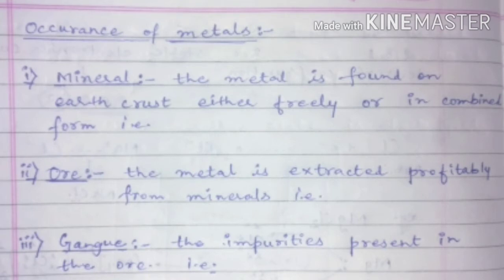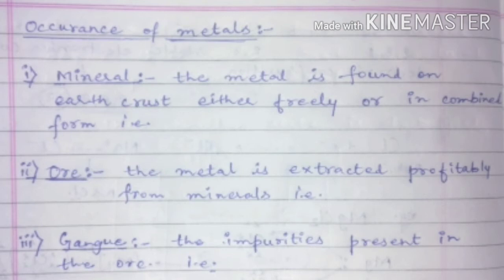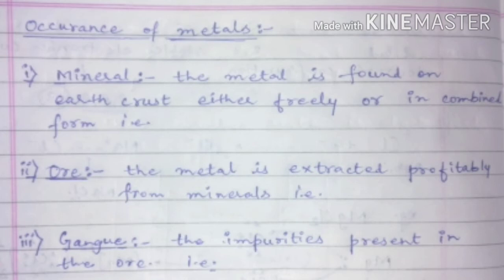One more thing — mostly ores are present in oxide form on the earth's crust. This is because oxygen is present on the earth and is reactive in nature, so it reacts with metals to form metal oxides, or sometimes metal sulfides and metal carbonates. Ores are not present in nitride form because nitrogen is inert at atmospheric temperature and pressure. Now, gangue is the impurity present in ore.